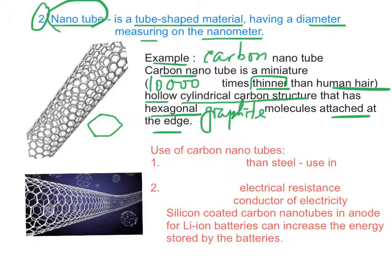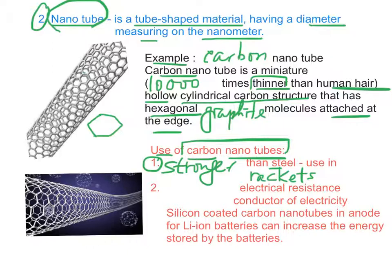The use of carbon nanotubes: First, since carbon nanotubes are stronger than steel, they are used in producing rackets such as badminton rackets or tennis rackets.